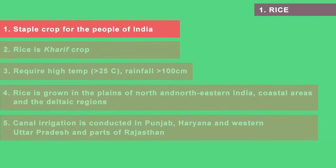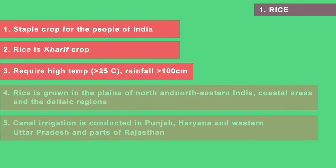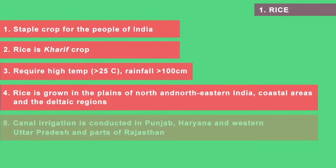The first major crop is rice. It is the staple food crop of a majority of people in India. Rice is a Kharif crop, meaning it is grown during the monsoon season starting in June. It requires high temperature above 25 degrees Celsius and annual rainfall above 100 centimeters. Rice is grown in the plains of north and northeastern India, coastal areas and deltaic regions, as these provide the water needed for its growth.